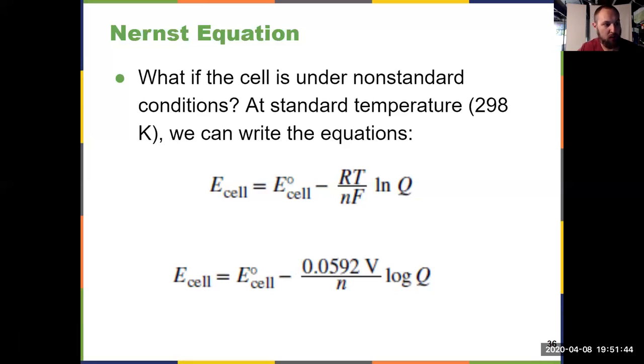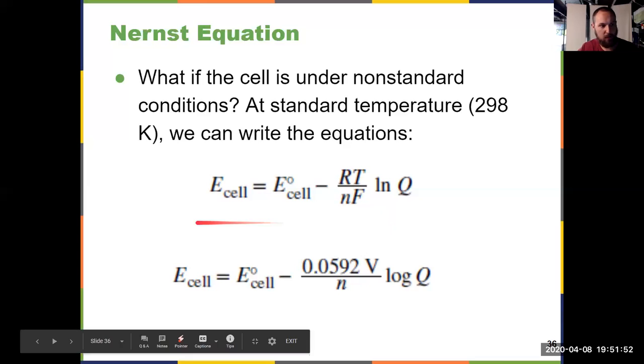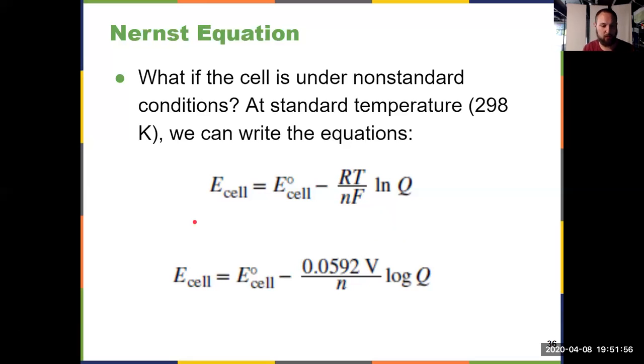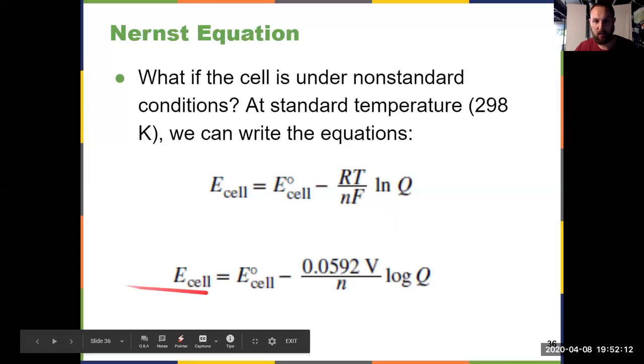This 0.0592 volts is what happens when R, T, and F are all combined together. So the Nernst equation - know that one from the bottom. You'll use that on your Sapling as well, plus all the earlier equations. There are five of them total from this chapter. Make sure you're comfortable with using all of them. And then in the last video, we'll talk about where things have a negative cell potential and therefore are non-spontaneous.